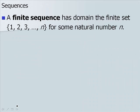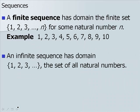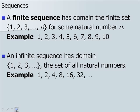A finite sequence has domain the finite set 1, 2, 3, up to n for some natural number n. An infinite sequence has domain 1, 2, 3, etc., which is the set of all natural numbers.